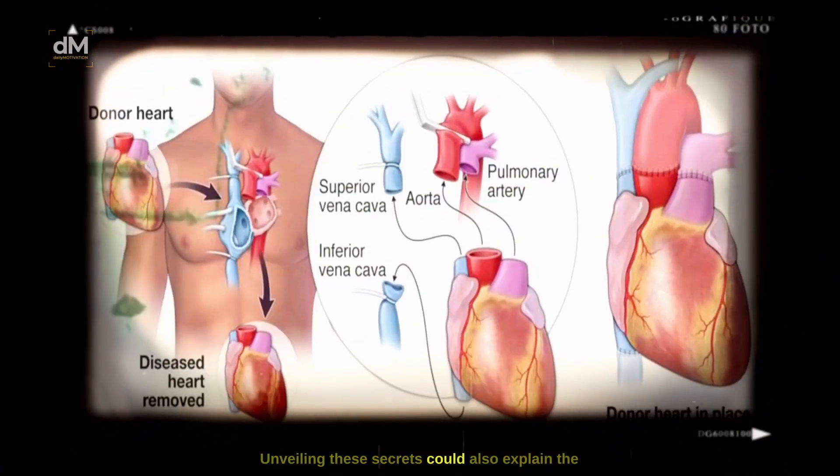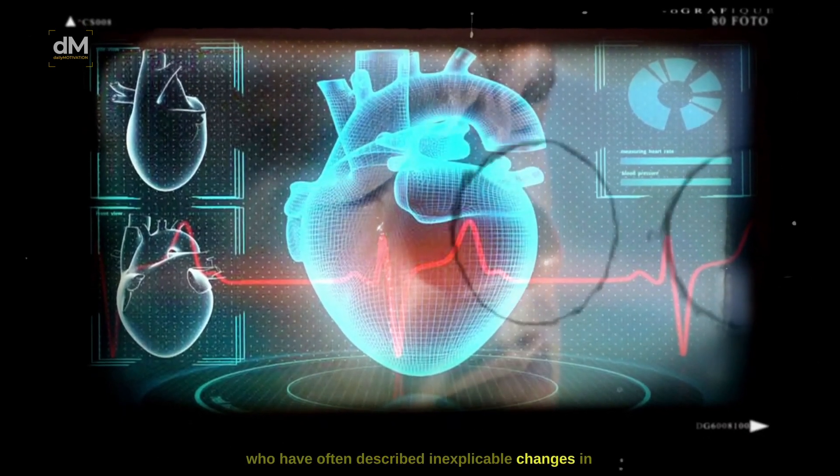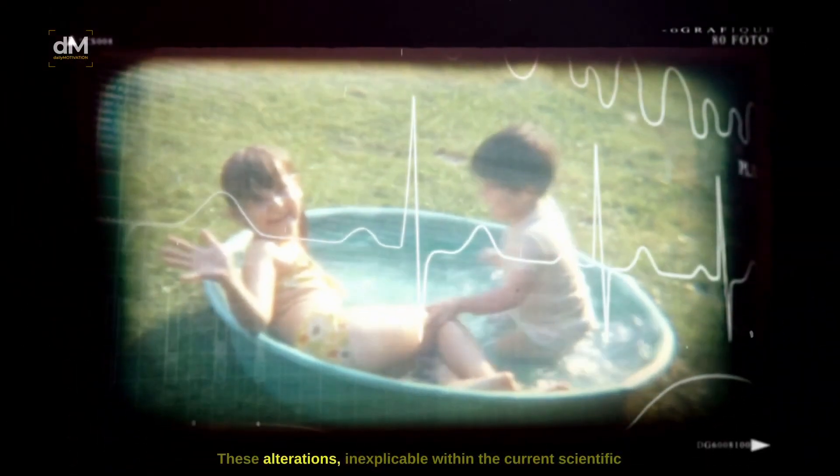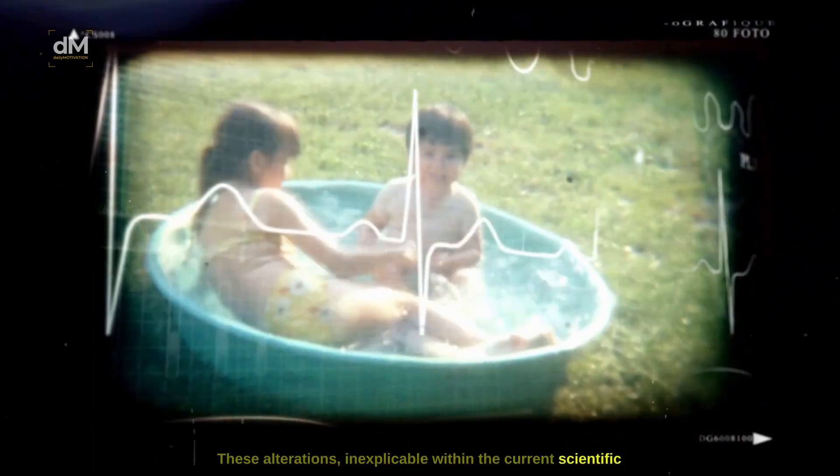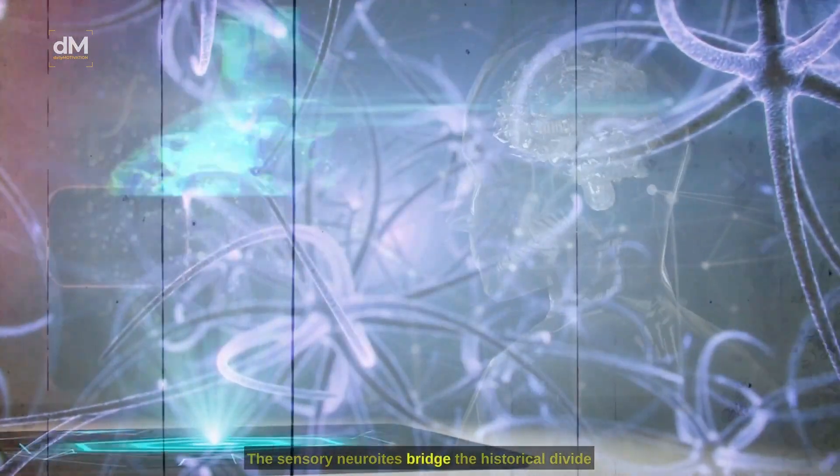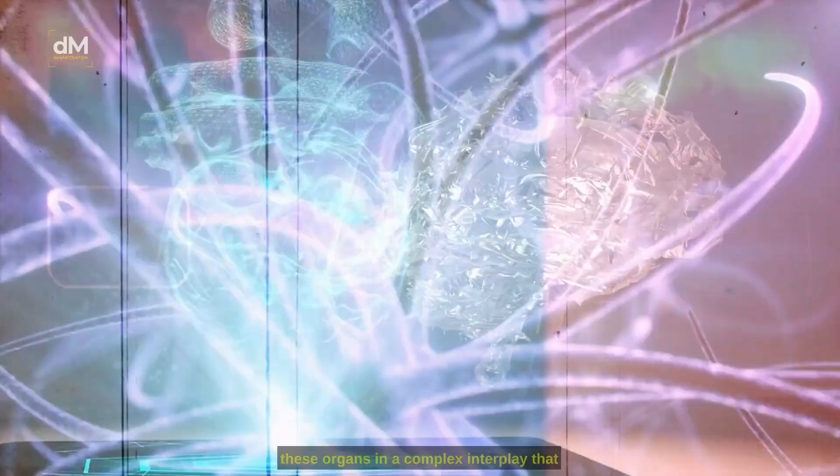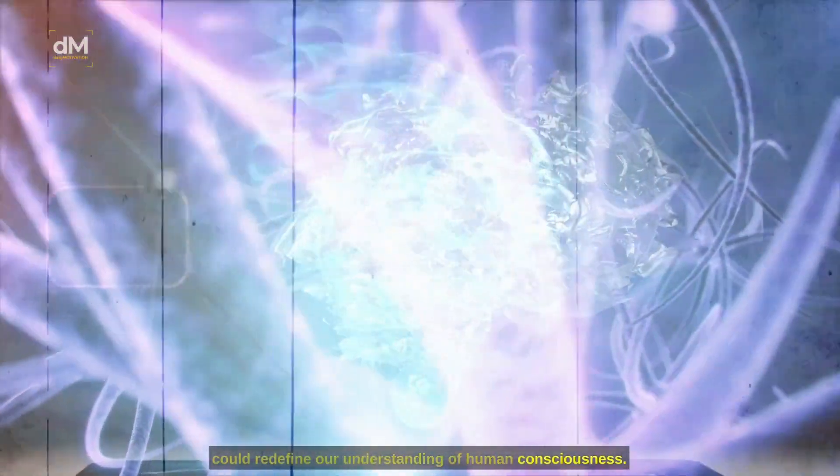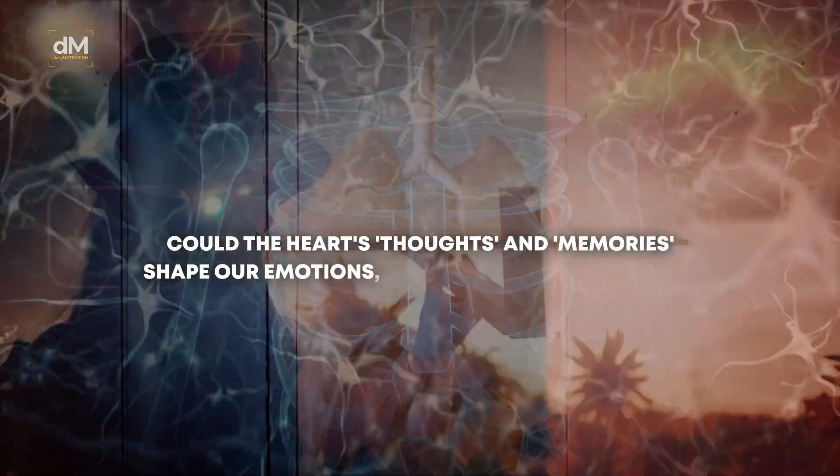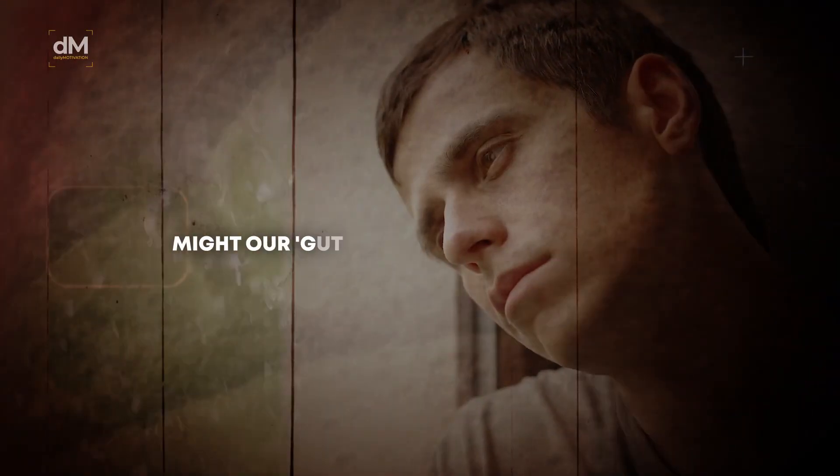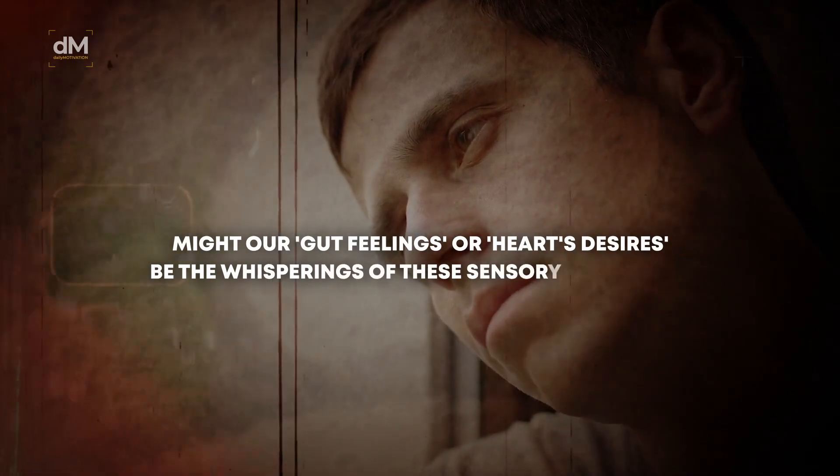Unveiling these secrets could also explain the curious phenomena reported by heart transplant recipients who have often described inexplicable changes in preferences or behavior post-transplant. These alterations, inexplicable within the current scientific framework, might be the imprint of the donor's cardiac memories carried within the sensory neuroites of the transplanted heart. These sensory neuroites bridge the historical divide between the heart and the brain, uniting these organs in a complex interplay that could redefine our understanding of human consciousness. Could the heart's thoughts and memories shape our emotions, perceptions and intuition? Might our gut feelings or heart's desires be the whispering of these sensory neuroites?